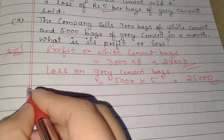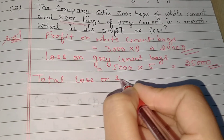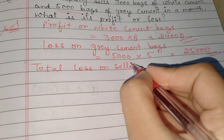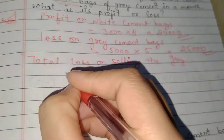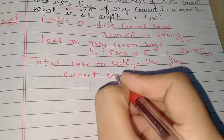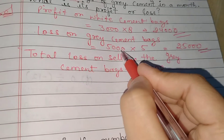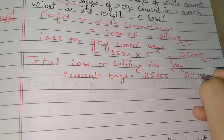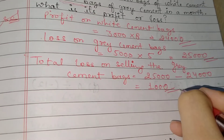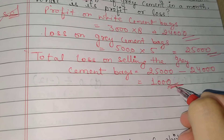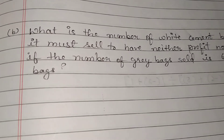So the total loss on selling the grey cement bags is rupees 25,000, and the profit on white cement bags is rupees 24,000. When you subtract, 25,000 minus 24,000, you get rupees 1,000. So there is an overall loss of rupees 1,000.